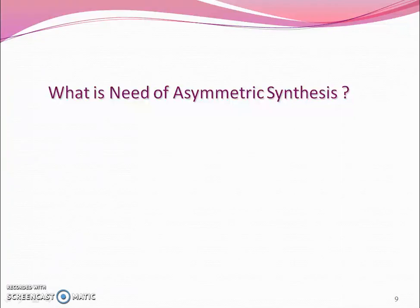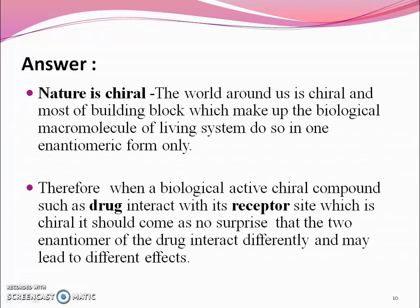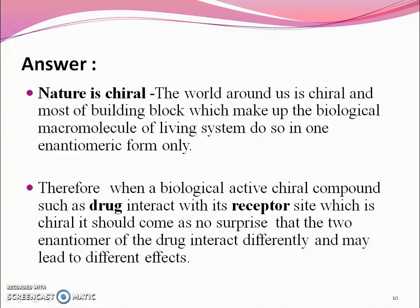What is the need for asymmetric synthesis? The answer is: as nature is chiral, the world around us is chiral, and most of the building blocks which make up the biological macromolecules of living systems do so in one enantiomeric form only. Therefore, when biologically active chiral compounds such as drugs interact with the receptor site, which is also a chiral one, it should come as no surprise that the two enantiomers of a drug interact differently and may lead to different effects.